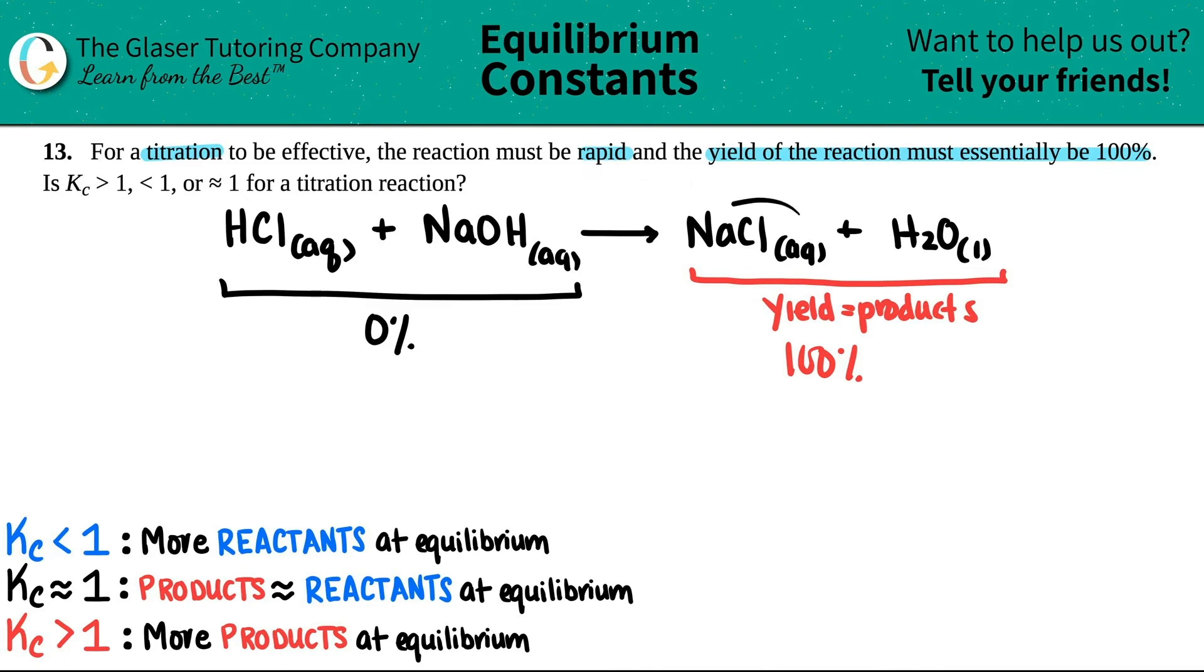And the yield, your products, will be essentially 100%. And this is at equilibrium, right? At equilibrium, you're going to basically have all products and no reactants.